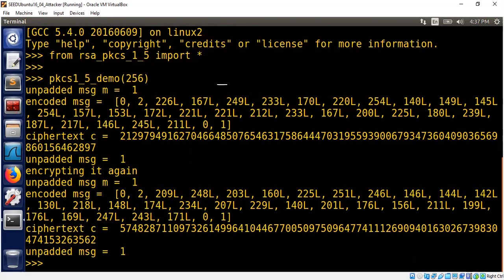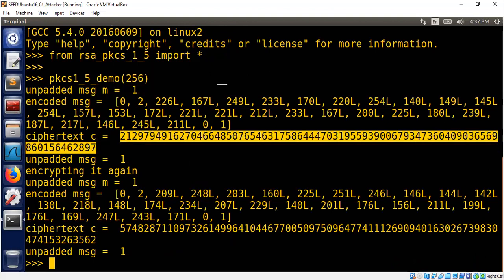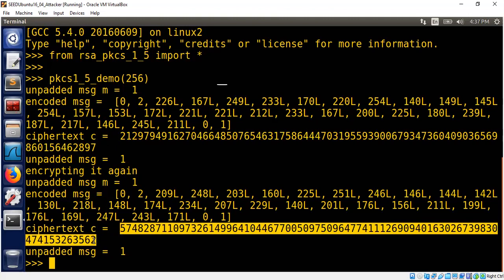So a couple of things. My message is 1. The ciphertext is this. But the same message for the same key, you have a different ciphertext. That's basically the reason why we need to introduce randomness into our encryption process.